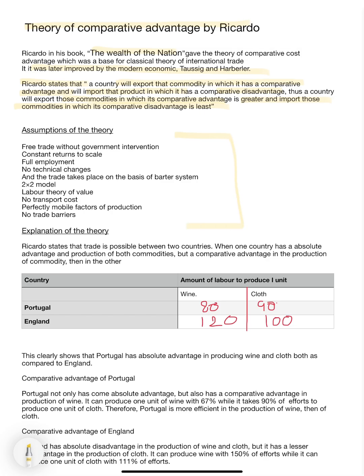These are certain assumptions of his theory. First, there should be free trade without any government intervention, constant returns to scale, full employment, no technical change — meaning technology is constant — and a two-two-two model, which involves two commodities and two factors of production, that is labour and capital. Trade takes place on the basis of a barter economy.